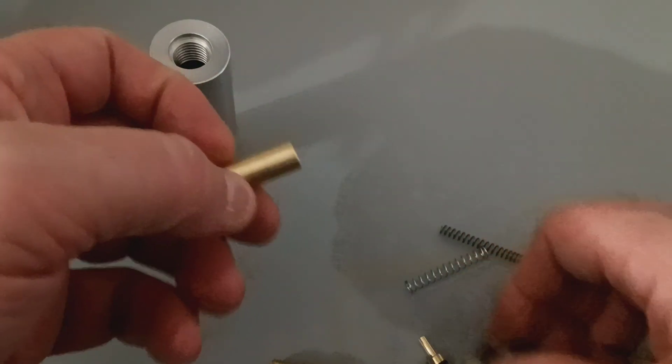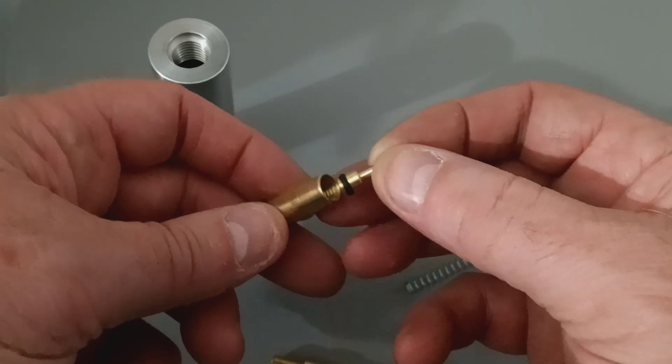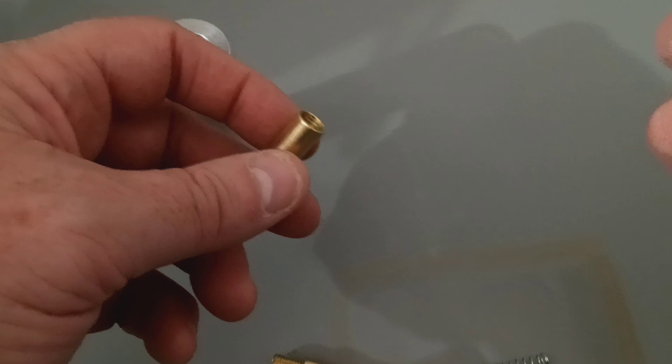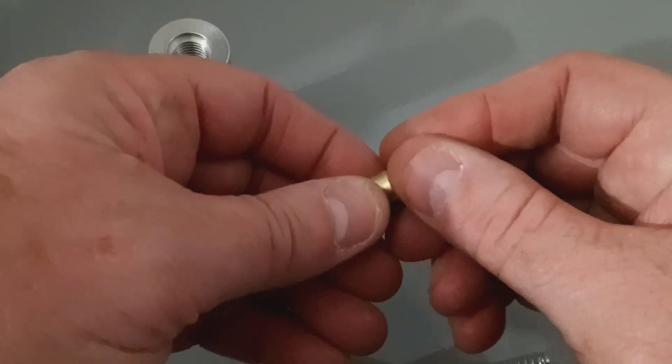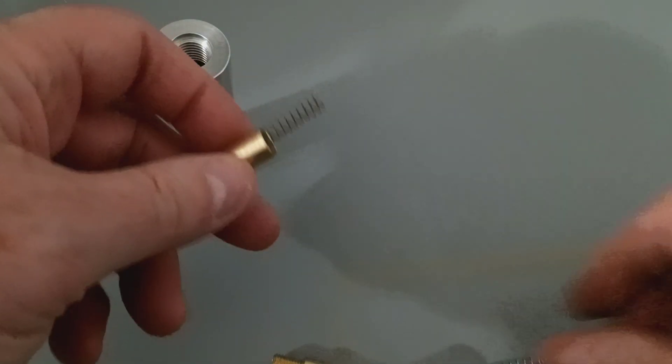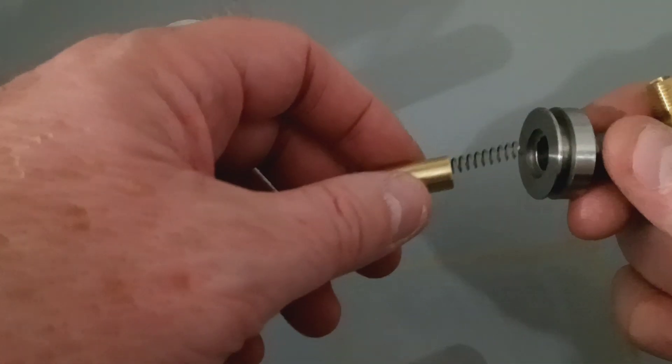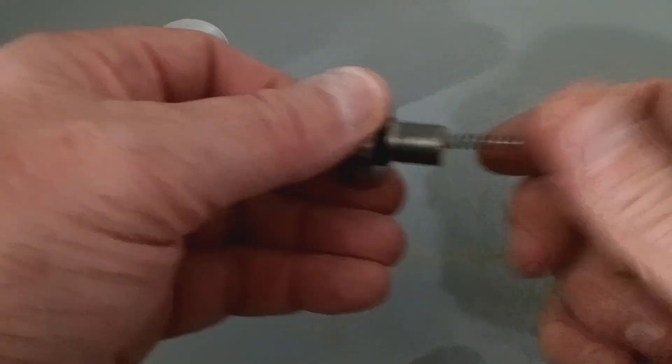So what we do is, here's the check seal. It goes in there like that. The spring goes behind it. This will feed through like that.